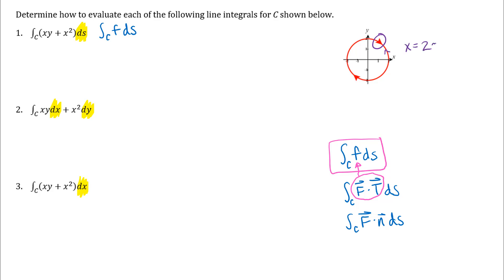You might do x equals 2 cosine t, y equals 2 sine t, and let t go from 0 to 2 pi. But we need the orientation to be clockwise instead of counterclockwise. So there's several ways to do that.